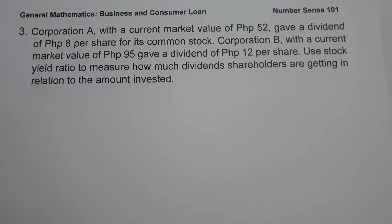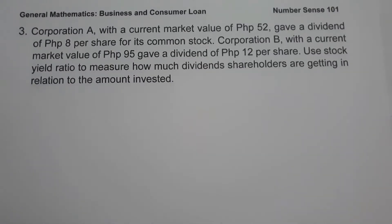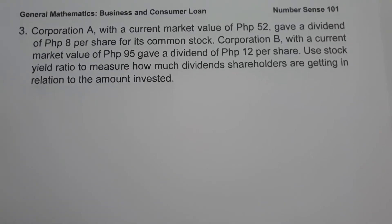For our last example: Corporation A has a current market value of 52 pesos and gave a dividend of 8 pesos per share for its common stock. Corporation B has a current market value of 95 pesos and gave a dividend of 12 pesos per share. We will use the stock yield ratio to measure how much dividend shareholders are getting in relation to the amount invested. The stock yield ratio is the ratio of the annual dividend per share to the market value per share.